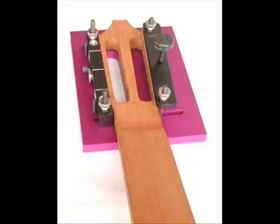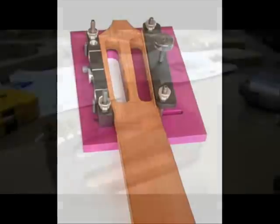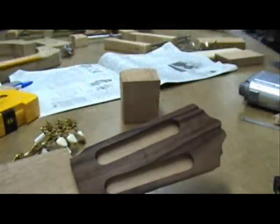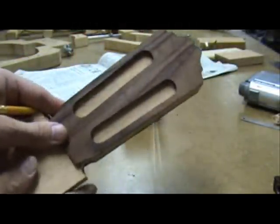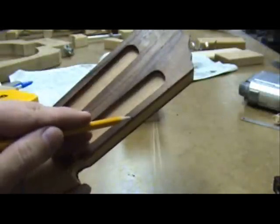LMI also makes a version for drilling classical or steel string tuner holes, and you can use the same jig to cut the slots. Start by cutting out the perimeter of the peg head. You will notice that my peg head still has my template attached to it from cutting out the shape.